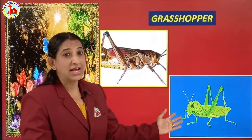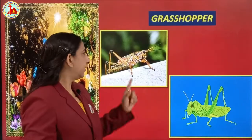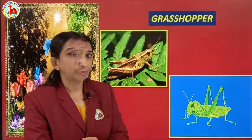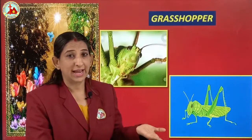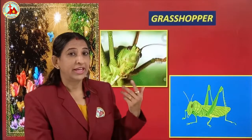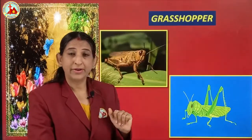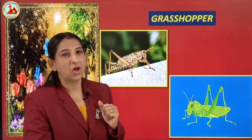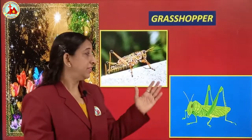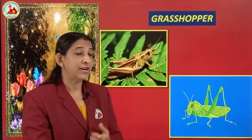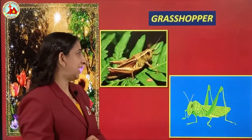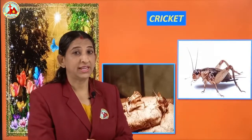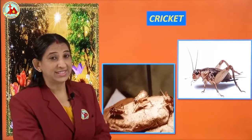Next is grasshopper. It is green in color, though there are different colors also. Why is it called grasshopper? Because it looks like grass — green color. If they are sitting in between the grass, we can't recognize them. Repeat after me — grasshopper.